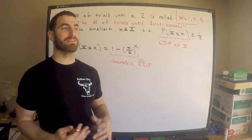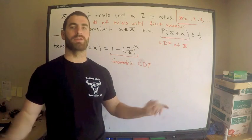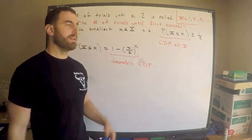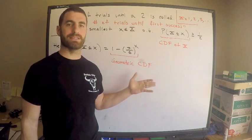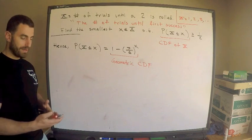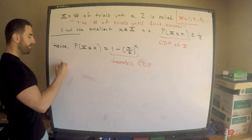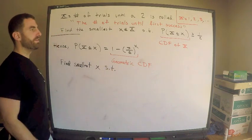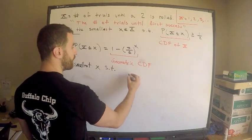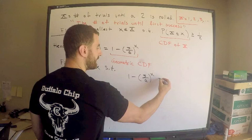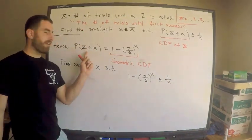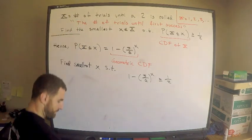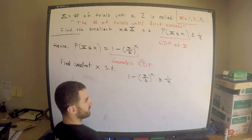If you recognized it immediately, great. If not, that's fine — everyone starts somewhere. Now, we need to find the smallest x such that the inequality holds: one minus five sixths to the x is greater than or equal to one half. Let's solve this inequality.